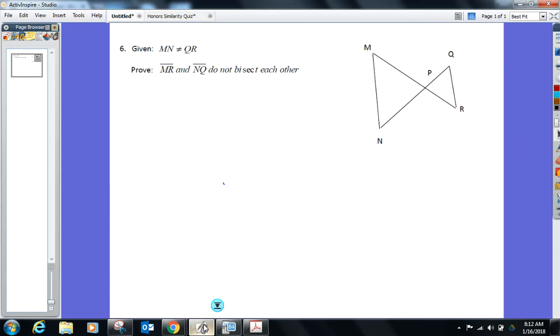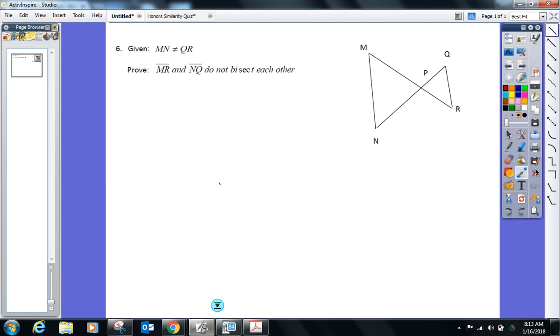On the midterm, it will not say prove indirectly. We're going to have to read it on Monday, and you're going to have to read it and say, oh, I need to do this indirectly. What up here signals I have to do this indirectly? James, go. Prove something's not happening. So once I see I have to prove something's not happening, I say to myself, ding, ding, ding, this is going to be an indirect proof.